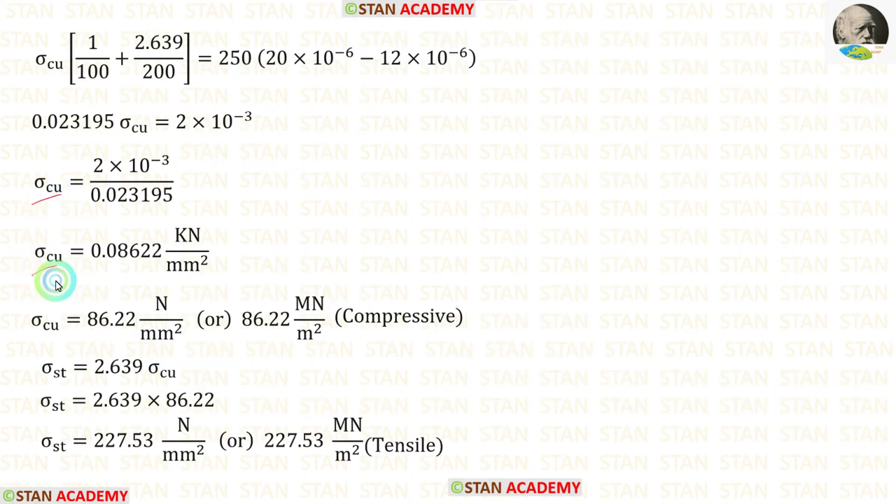After the calculation we are getting sigma Cu. We can convert sigma Cu either in Newton per millimeter square or MN per meter square. We know that sigma Cu is compressive.